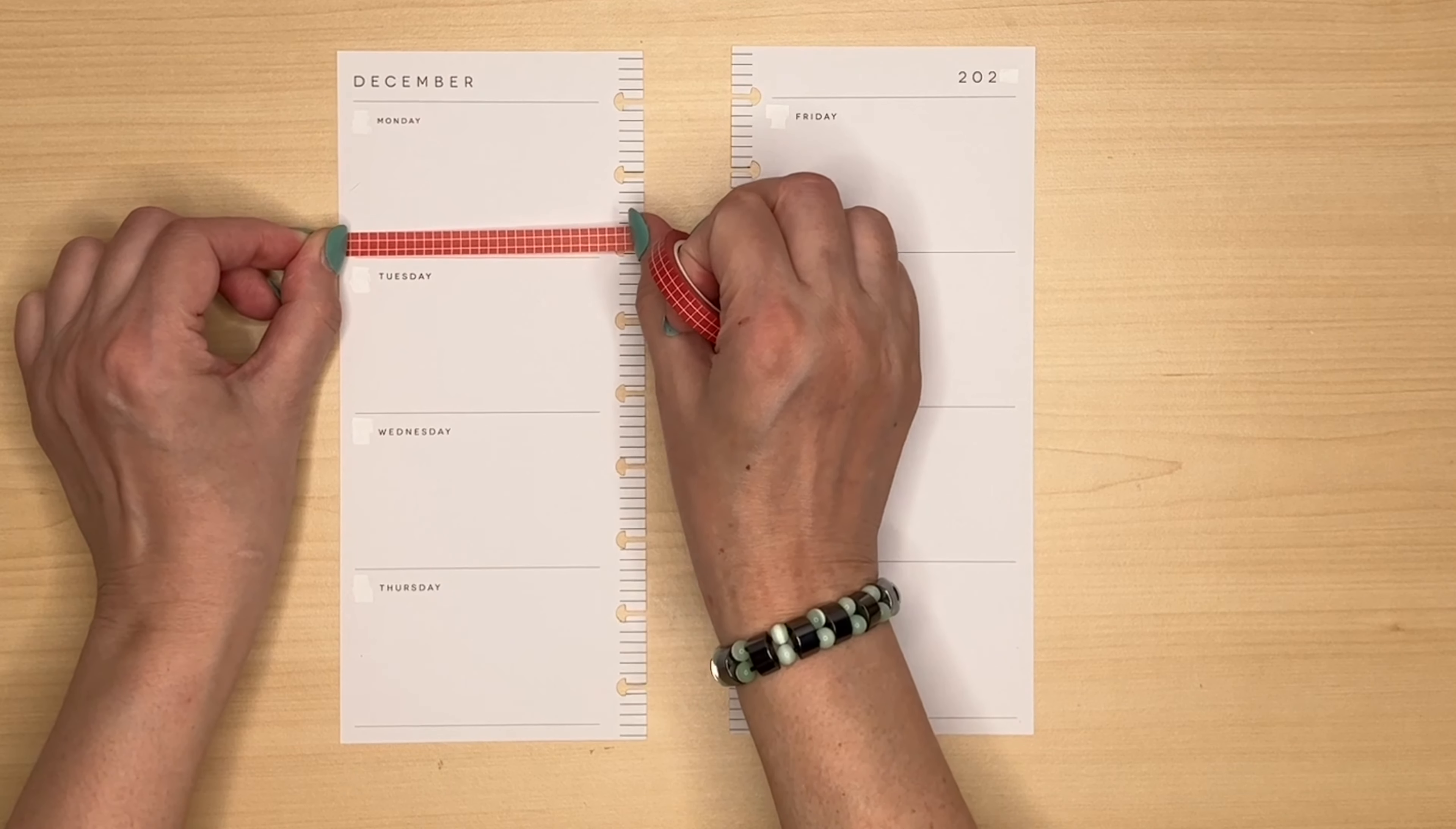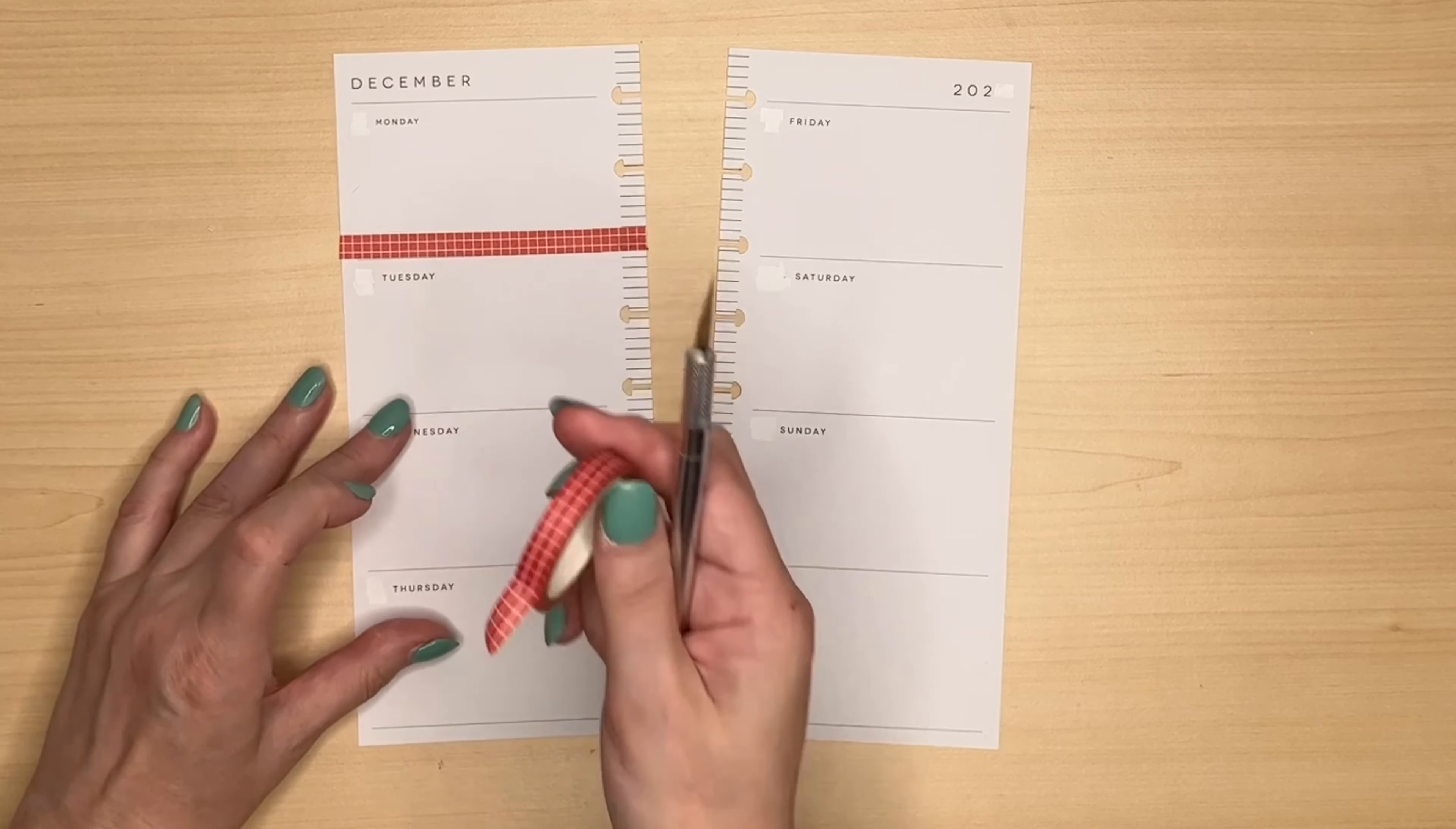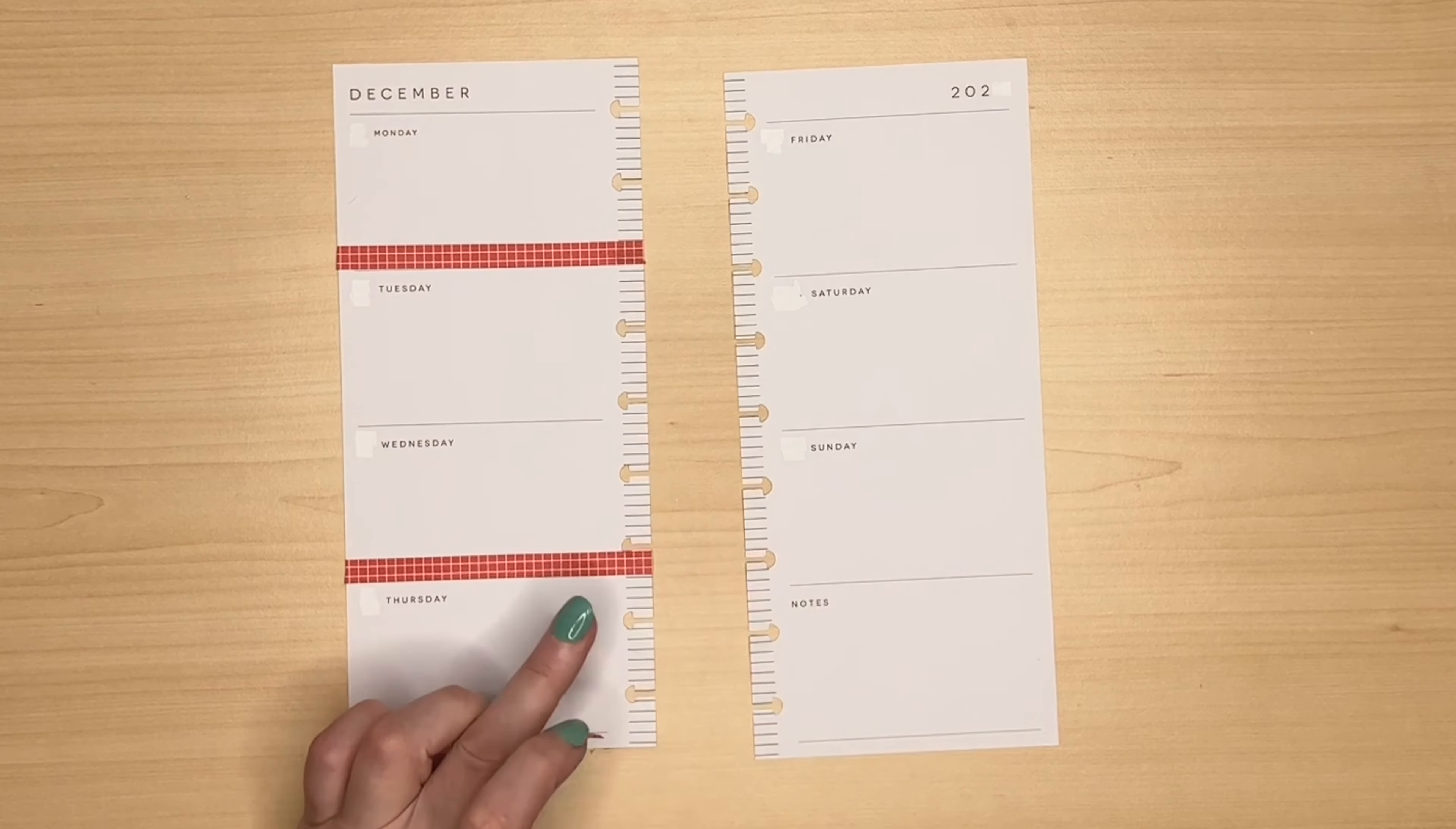I'm having to redate these pages in my skinny classic planner because it was an older 18 month planner. First thing I'm going to do is use my favourite Planything grid washi. This is the only red I've got.